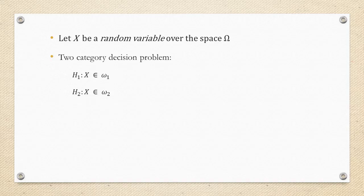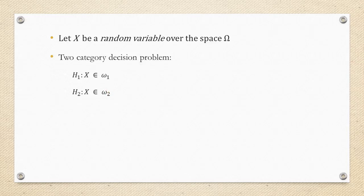The two-category decision problem can be generalized to the n-category decision problem by creating a decision tree. You collapse hypotheses 2 through n into a single set, and if you choose that hypothesis you recursively start a new decision problem, discriminating between hypothesis 2 and hypotheses 3 through n. The two-category case is the core of what we're discussing — if we can show the Bayes decision rule is optimal in the two-category case, we've shown it's optimal in the n-category case.